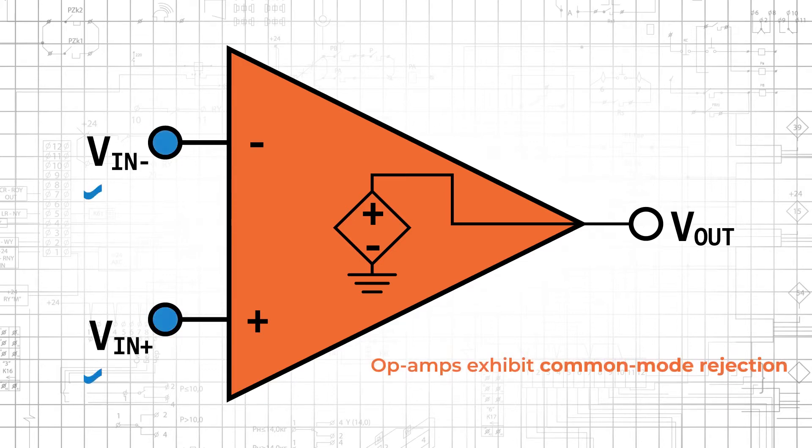Op-amps exhibit common mode rejection, meaning the op-amp will reject or ignore any voltage component, such as noise or a DC offset, that is present in both input signals.